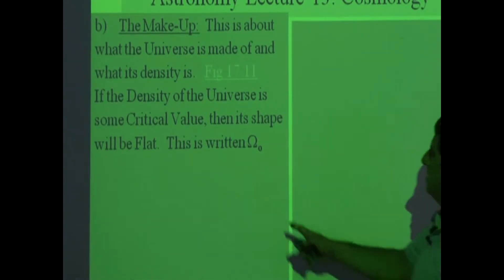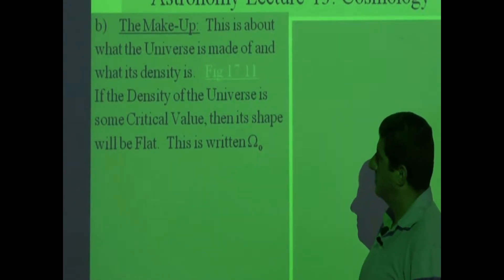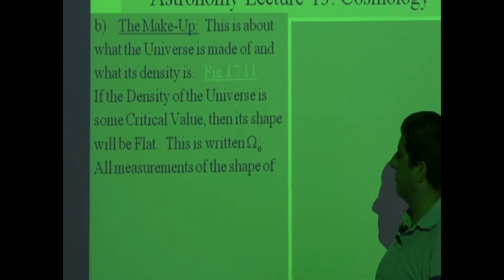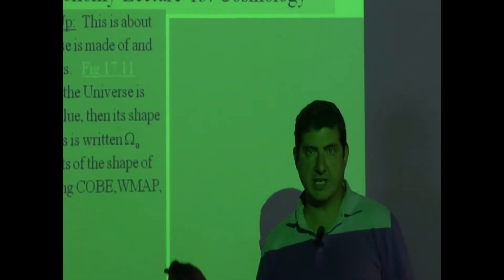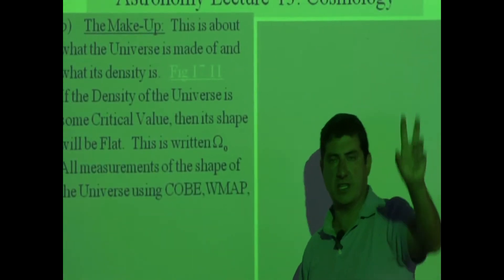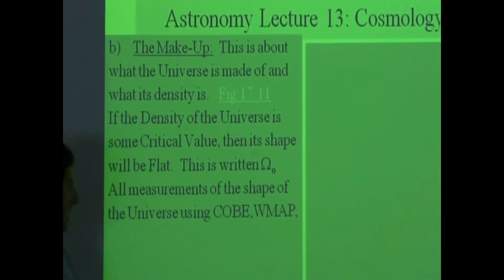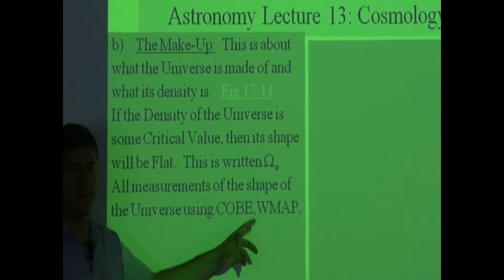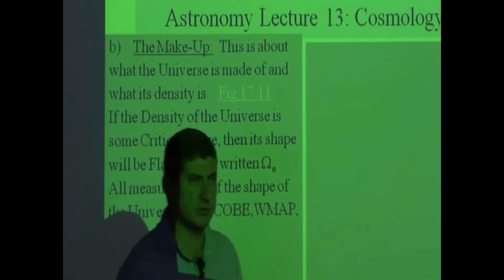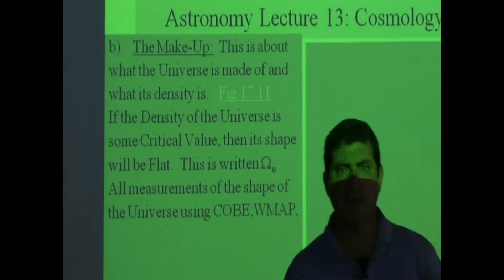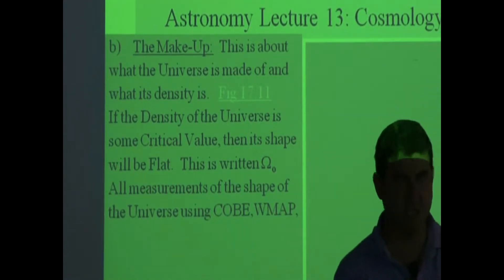This density is written as omega zero. All measurements of the shape of the universe so far, using the COBE satellite — remember the picture COBE sent with the fluctuations, the hot spots — COBE operated from roughly 1990 to 1998 or 1999, through the 1990s.